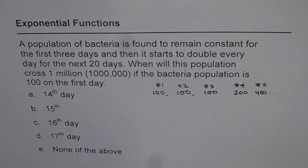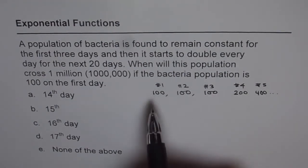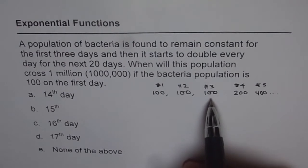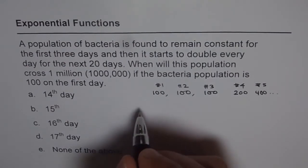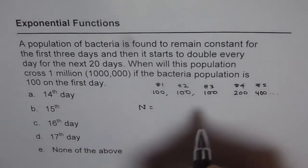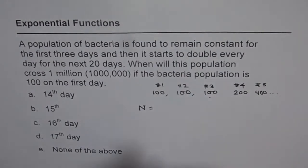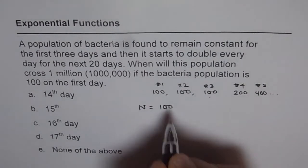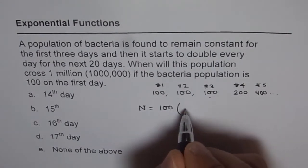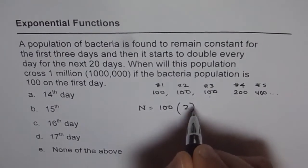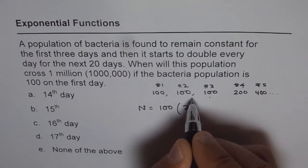Now to write down this equation, what we should do is instead of starting from one, it is better to start from three. That means we can say the number of bacteria N equals the initial number on day three, which is 100, times 2 to the power of t, where t is the number of days. Because every day it doubles, d is one, so it is 2 to the power of t.